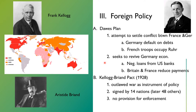The Dawes Plan also sought to revive the German economy. The United States would negotiate loans from U.S. banks to give to Germany — the idea being to give Germany the money necessary to pay Britain and France their reparations payments.